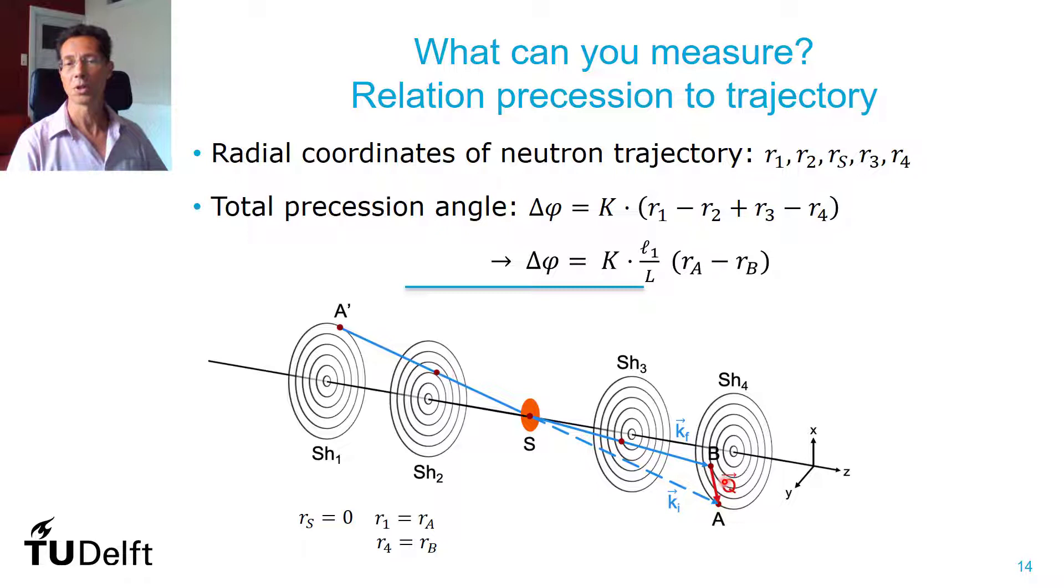Now if you calculate it, then it turns out that only the first radius and the final radius are of importance. So that way you relate precession to the trajectory.